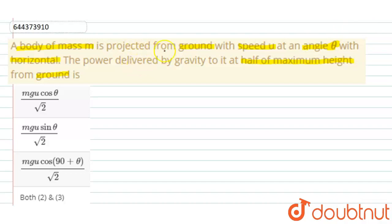A body of mass m is projected with speed u at an angle theta with horizontal.